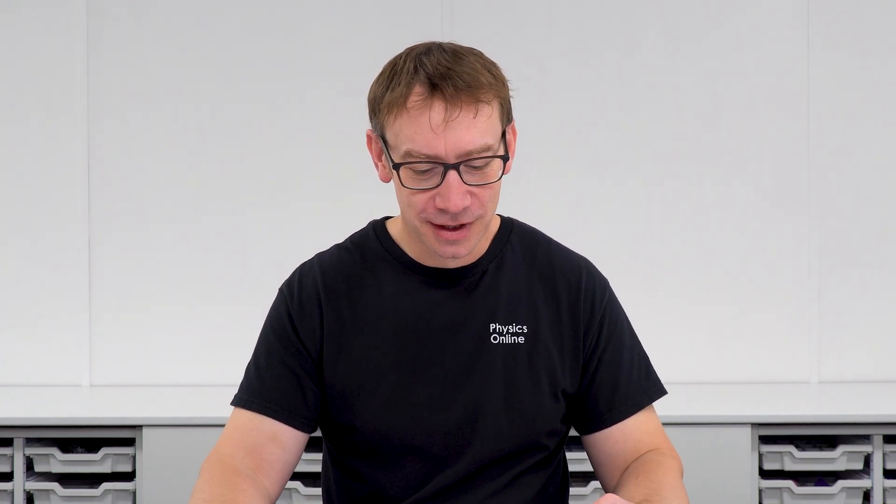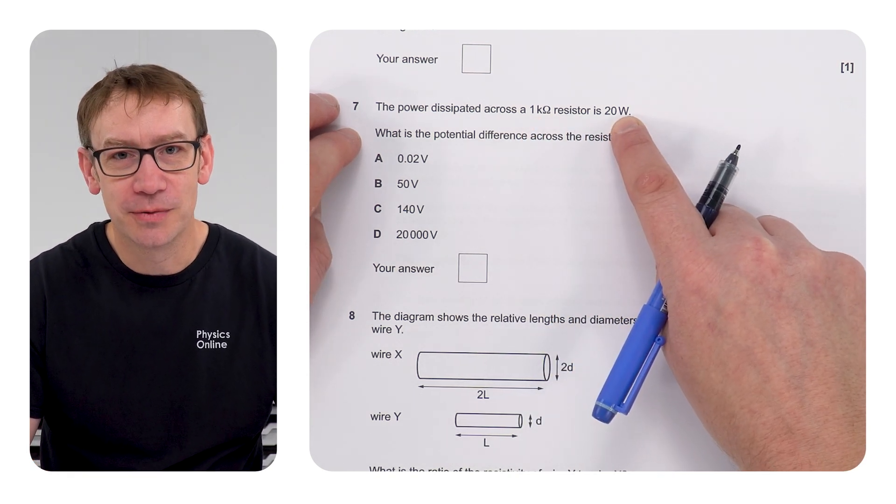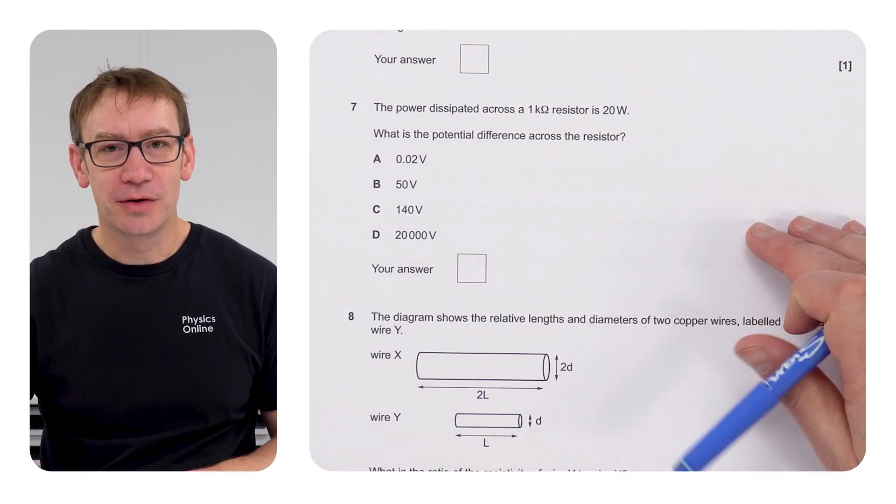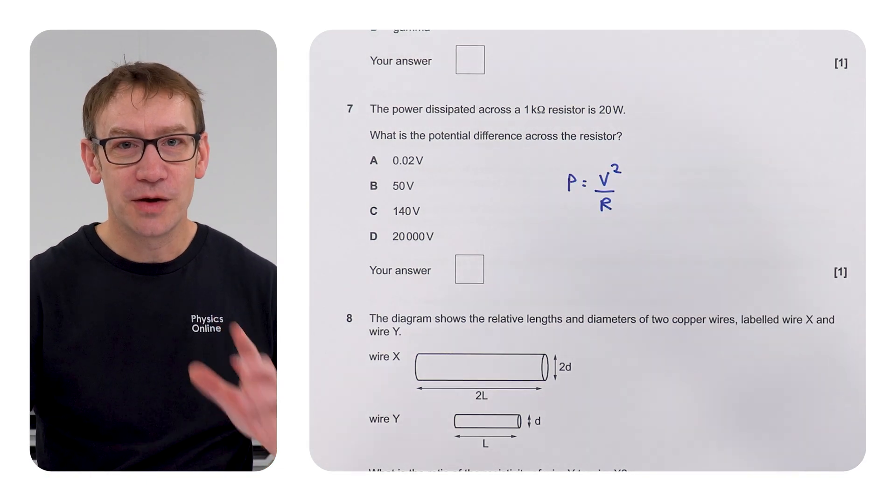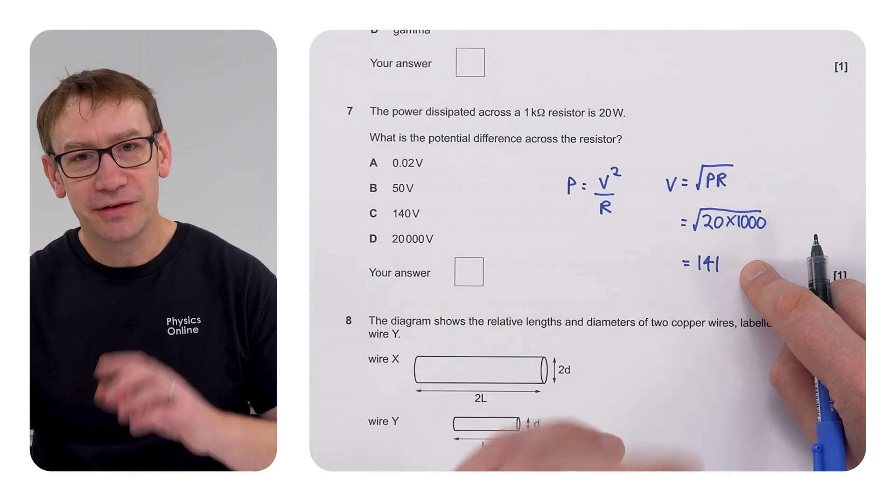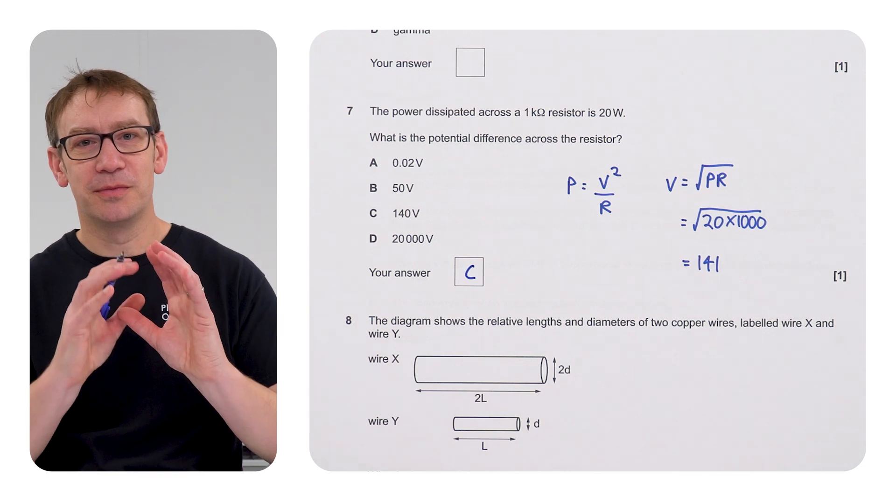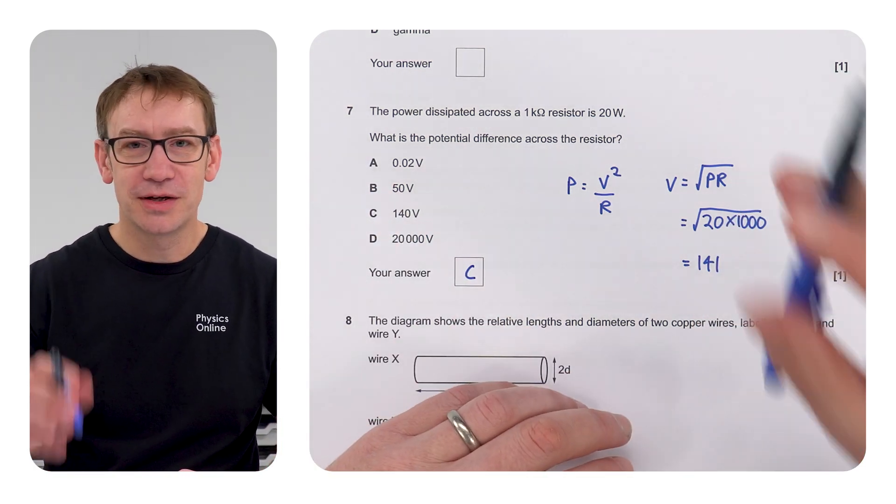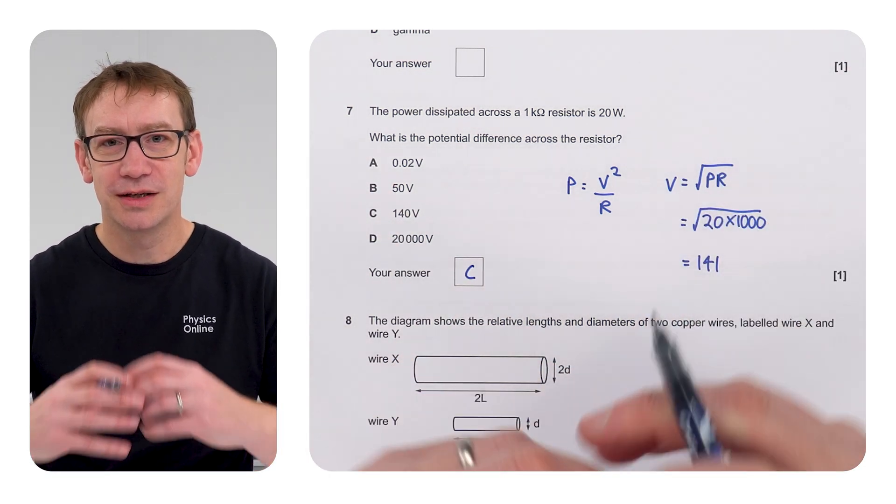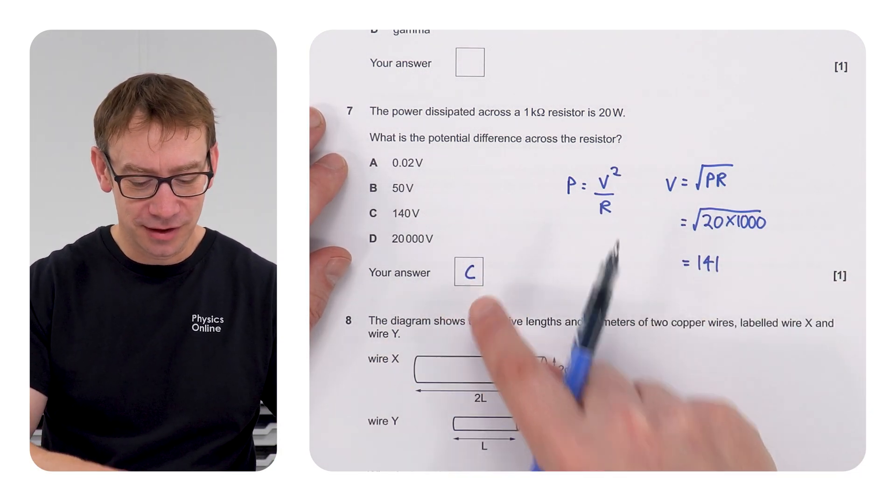They're not so bad, are they? This is A level stuff, remember, and obviously there are going to be more tricky questions. But you've got to make sure that the easy ones you always get correct. The next question is looking at the PD across a resistor. We know it's a kiloohm and the power is 20 watts. Even though nobody's going to mark your work, it's still useful to write down the equation, then rearrange it, then put in your numbers, and then work out the answer. That one is 141 volts, which I guess the closest answer to that is C. You will get some relatively straightforward calculations, but don't forget to always write down the equation. Show some working to help you actually work out the correct answer.